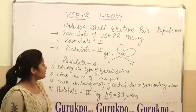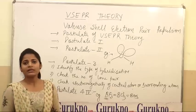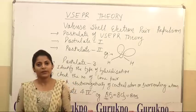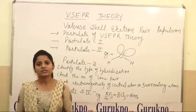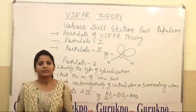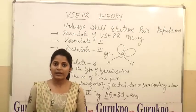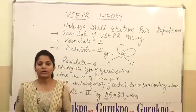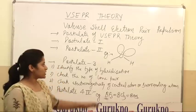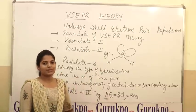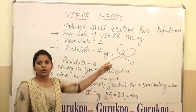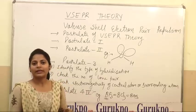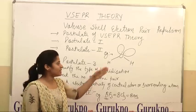Postulate 2: if all the electron pairs around the central atom are not bond pairs but there are some lone pairs also present, then the structure is distorted. Distortion is because of the repulsion — lone pair–lone pair repulsion, lone pair–bond pair repulsion, and bond pair–bond pair repulsion. For example, in the water molecule there are 2 bond pairs of hydrogen and 2 lone pairs present. Its hybridization is SP3, but its shape is V-shape, or we can say bent shape.